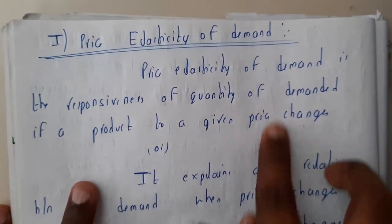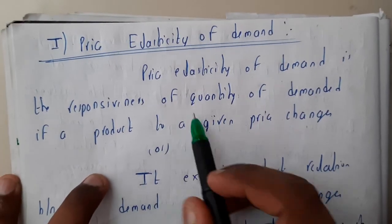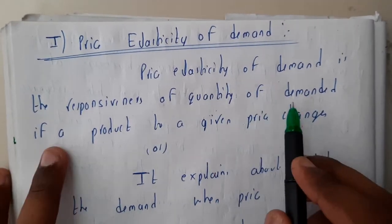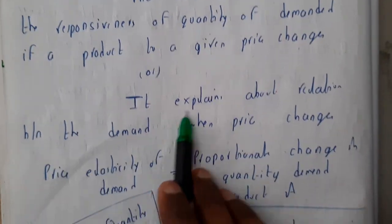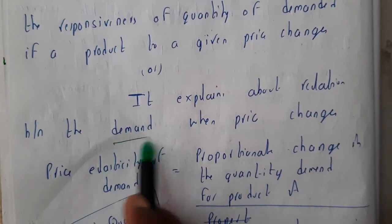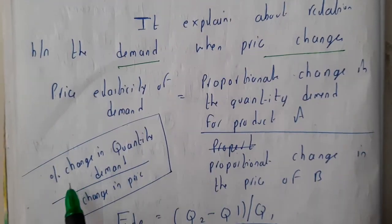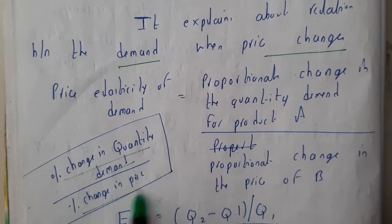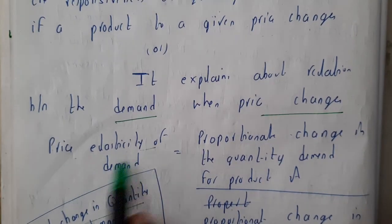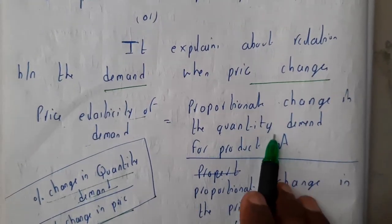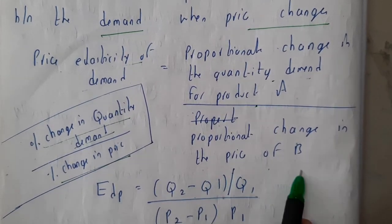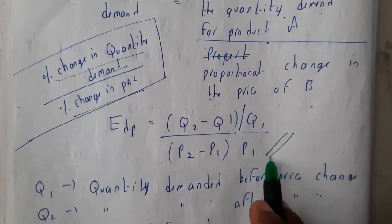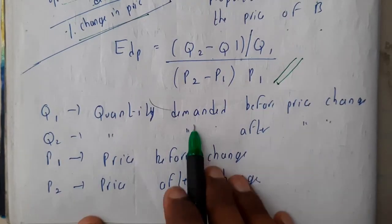Price elasticity of demand is the responsiveness of quantity demanded of any product to a given change in price. It explains the relation between demand and when the price changes. That is: percentage change in demand divided by percentage change in price. Price elasticity is the proportional change in quantity demanded divided by the proportional change in price. You can write the formula in this way — just go through the formula and the variables.